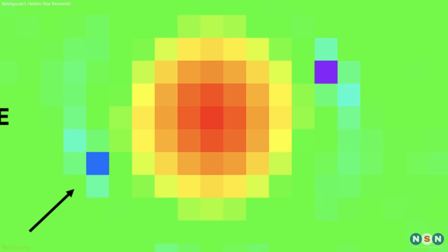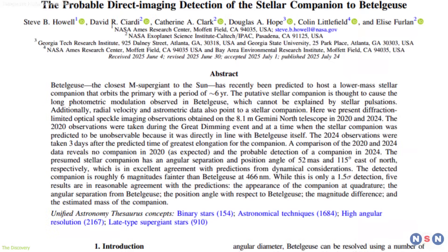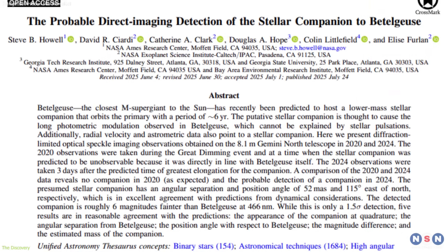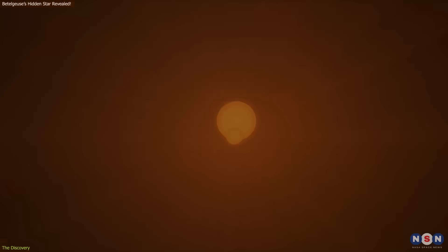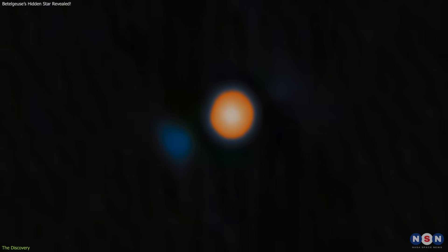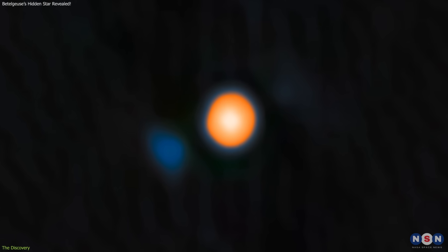The statistical confidence is modest, which is why the team describes the finding as probable rather than confirmed. More data are needed before declaring certainty. Still, the alignment between theoretical predictions and the observed position is striking.